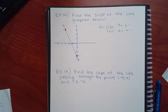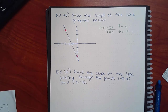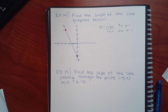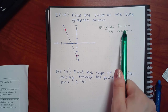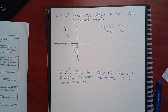A student asks a clarifying question: the rise can also be a fall — yes, when you go down, that's still your rise, it's just negative. And then you're either running forward to the right or backwards to the left.